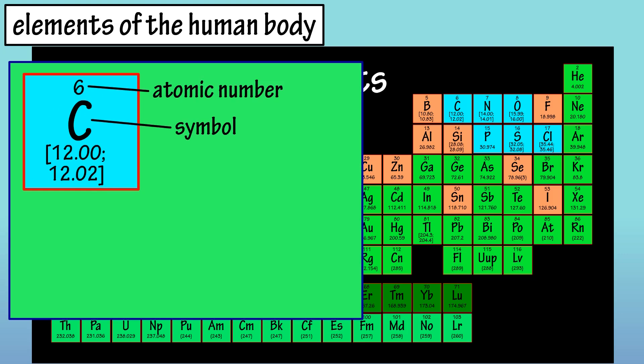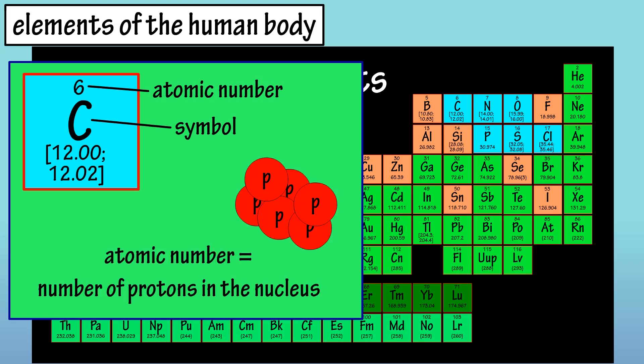For instance, carbon has a symbol C, and its atomic number is 6. The atomic number is the number of protons in its nucleus. This means that carbon atoms and only carbon atoms have 6 protons in their nucleus.